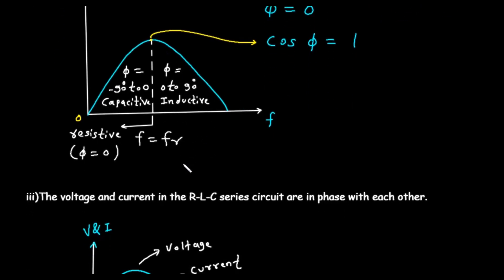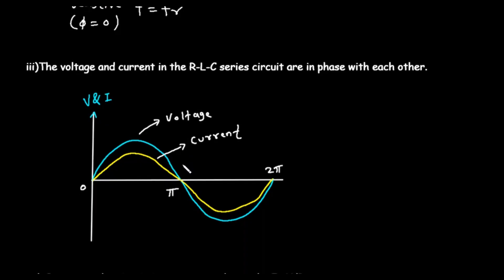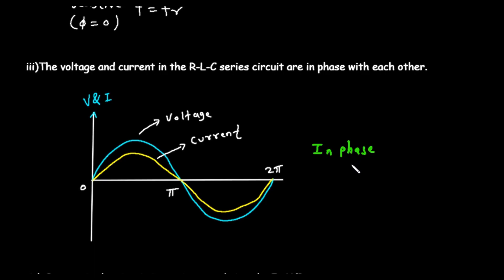Condition number 3: the voltage and current are in phase. This is a direct result of the previous condition. The voltage and current in the RLC series circuit are in phase with each other. The graph shows two sine waves plotted over time — one representing voltage, the other current. Both waves start at zero together, reach their positive peaks at the same time, cross zero going downwards at the same time, and reach their negative peaks at the same time. They are perfectly synchronized — this is what in phase means. There is no time delay between them, and this only happens at the resonant frequency.